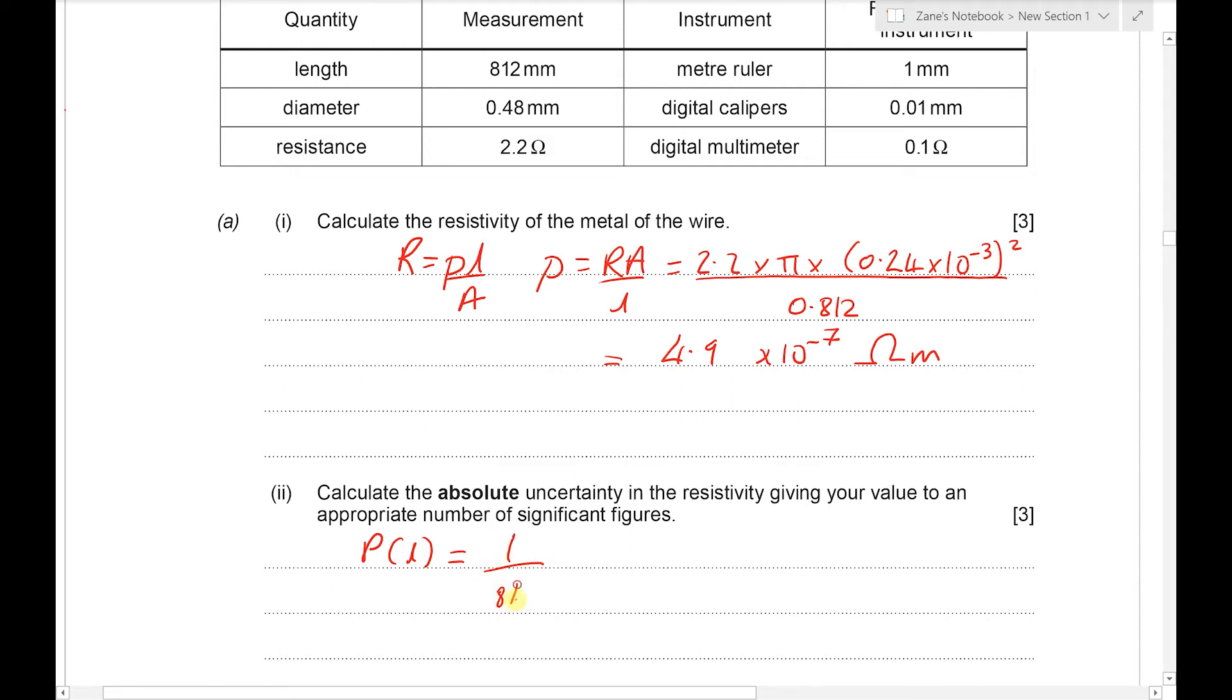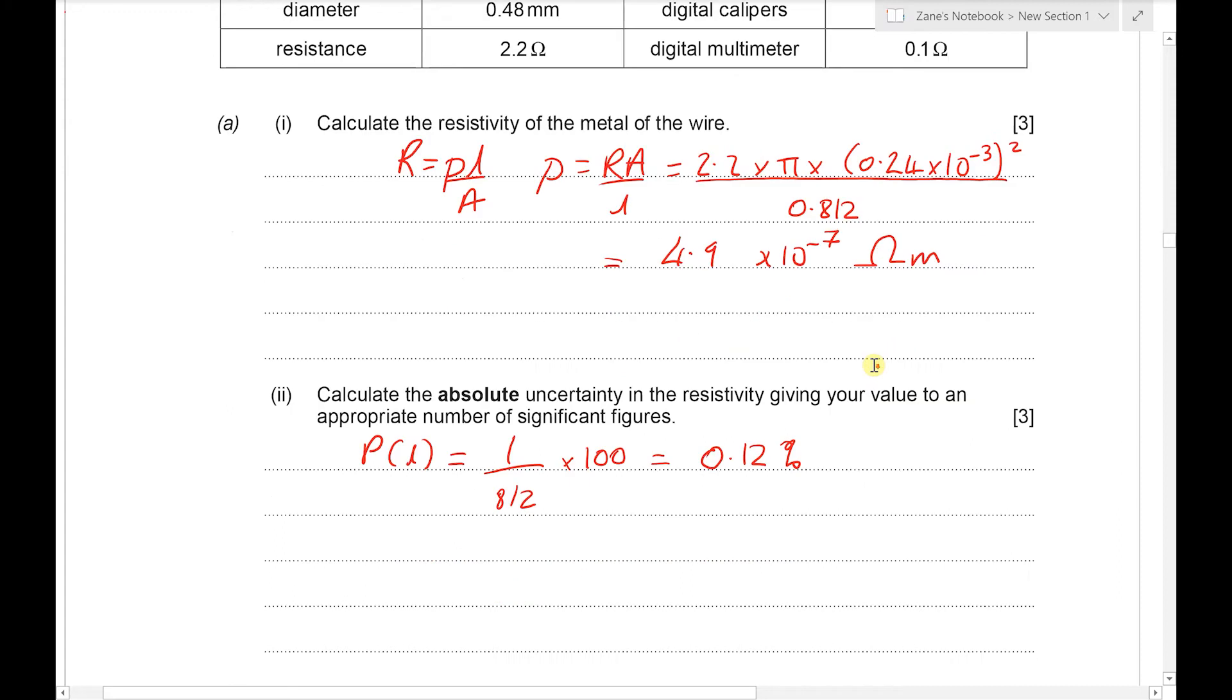That's going to be the absolute uncertainty in the length, one millimeter, divided by the actual length and multiplied by a hundred to turn that into a percentage. That comes out as 0.12%. Now remember, with uncertainties never give any more than two significant figures. So for the moment I'm going to work with two significant figures and then I'm going to round at the end.